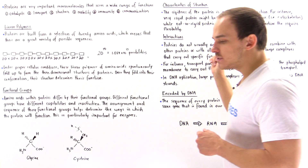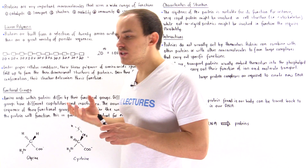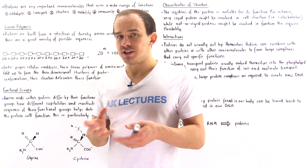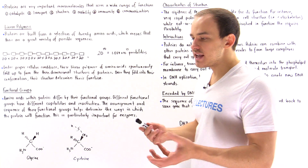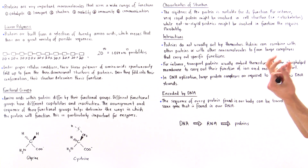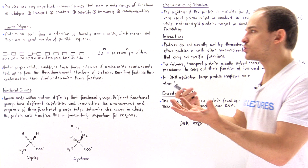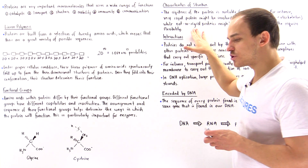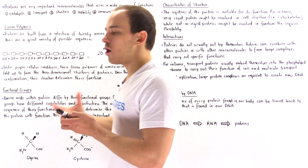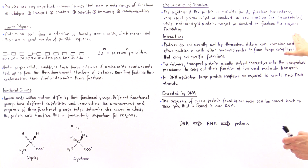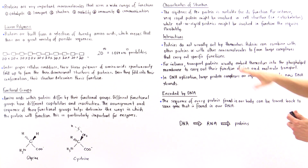Different proteins have different characteristics. Some proteins are very rigid while other proteins are not so rigid. For example, the rigid proteins might be involved in giving cells their structure — creating the cytoskeleton — while the less rigid proteins are involved in processes that require a bit more flexibility.